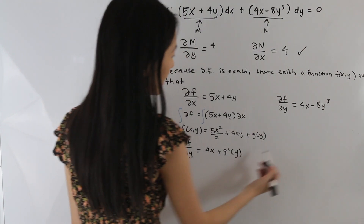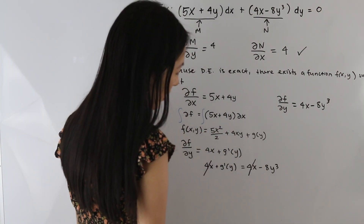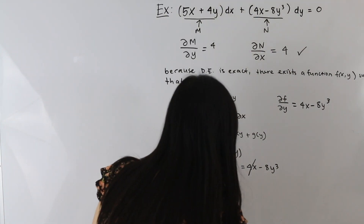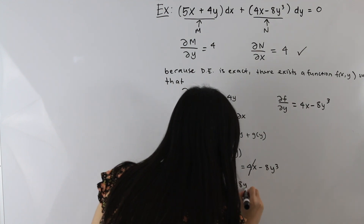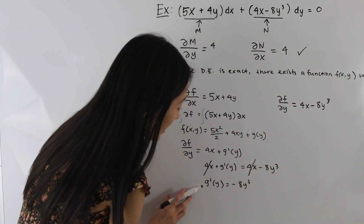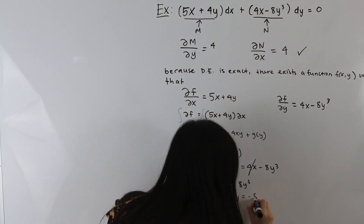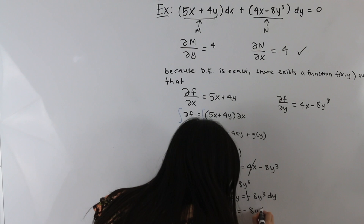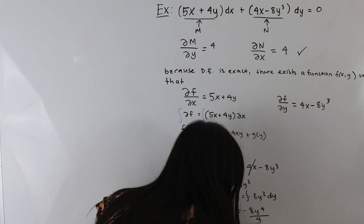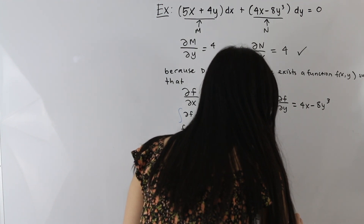We set this equal to N. The 4x terms on both sides cancel out, and we are left with g′(y) = −8y³. Integrating both sides, we get g(y) = −8y⁴/4, which simplifies to −2y⁴.